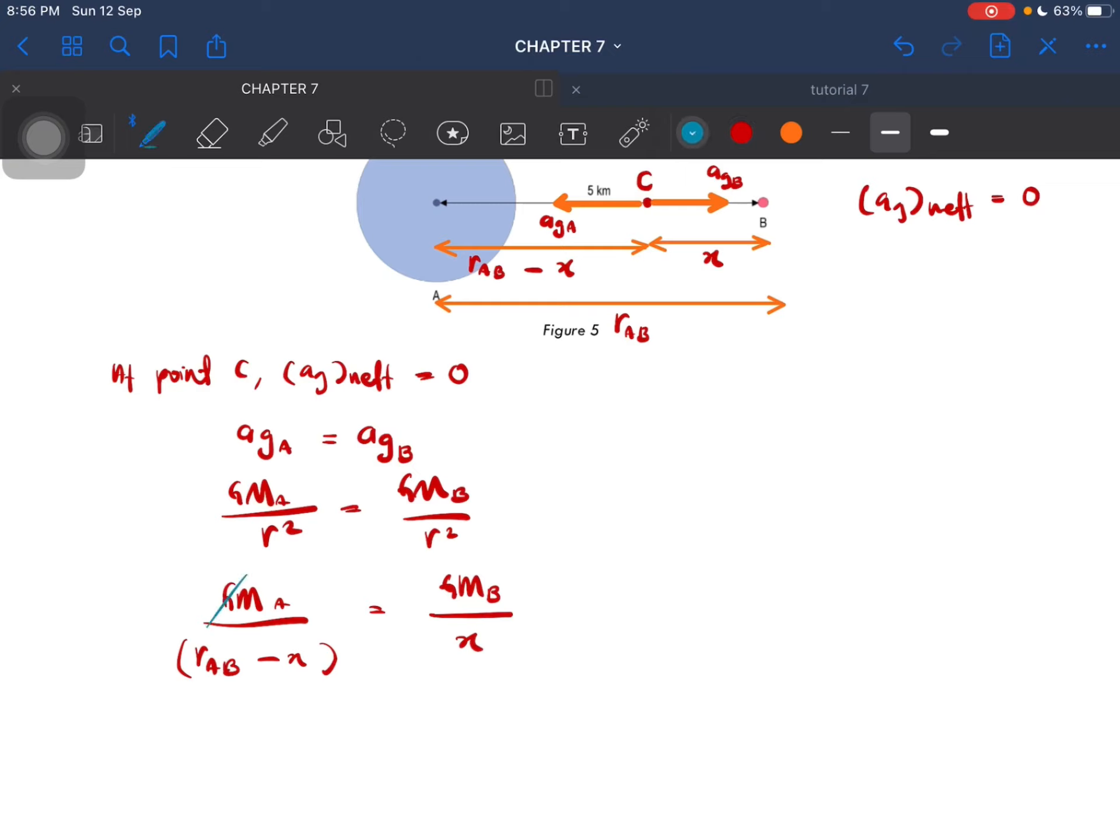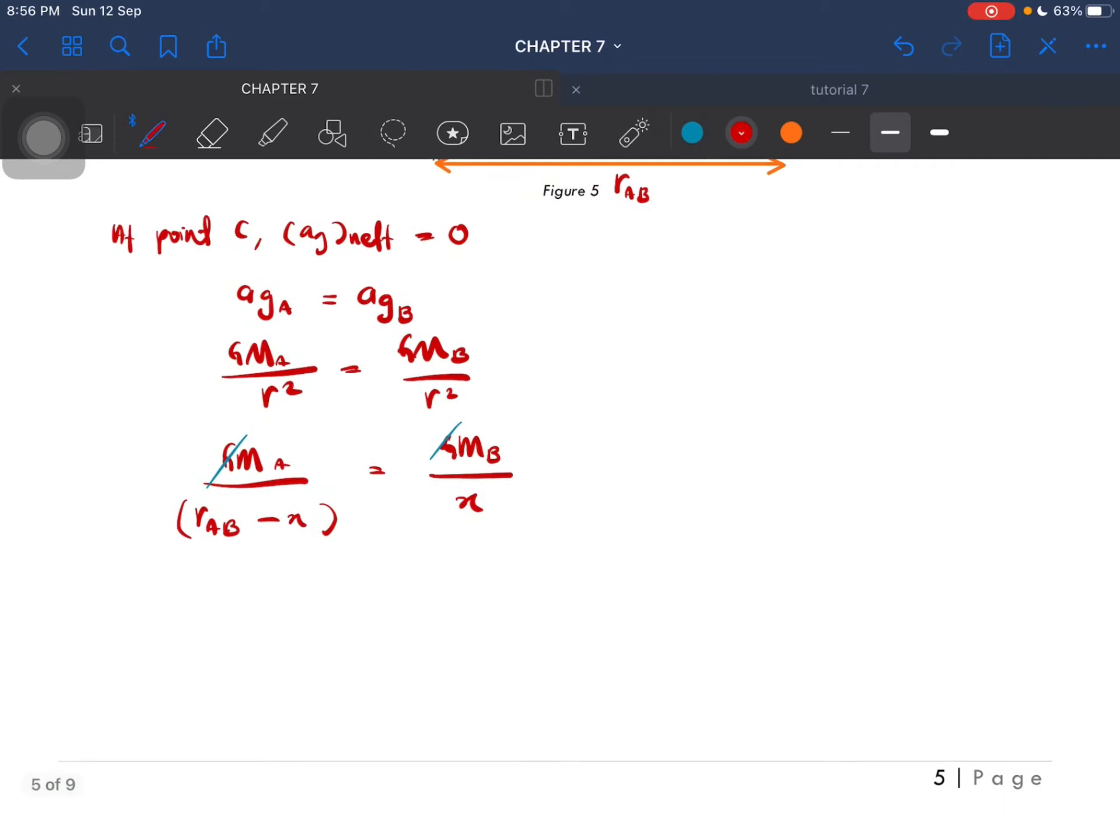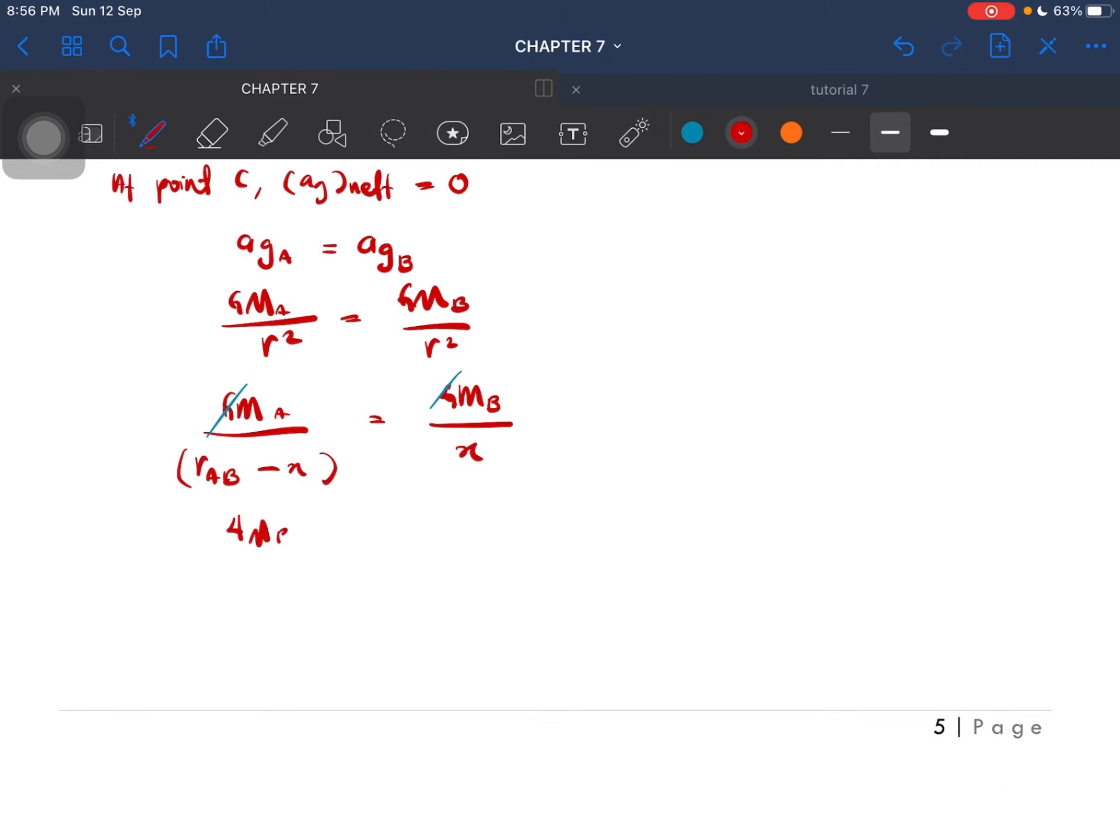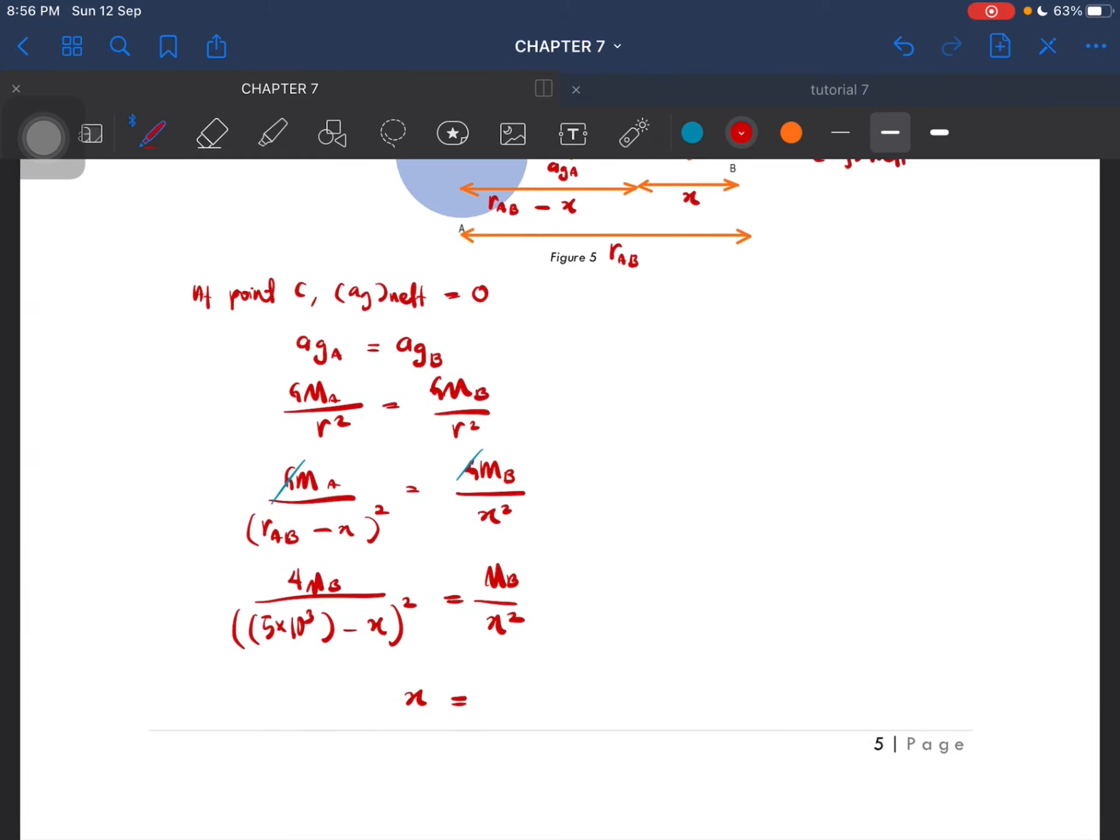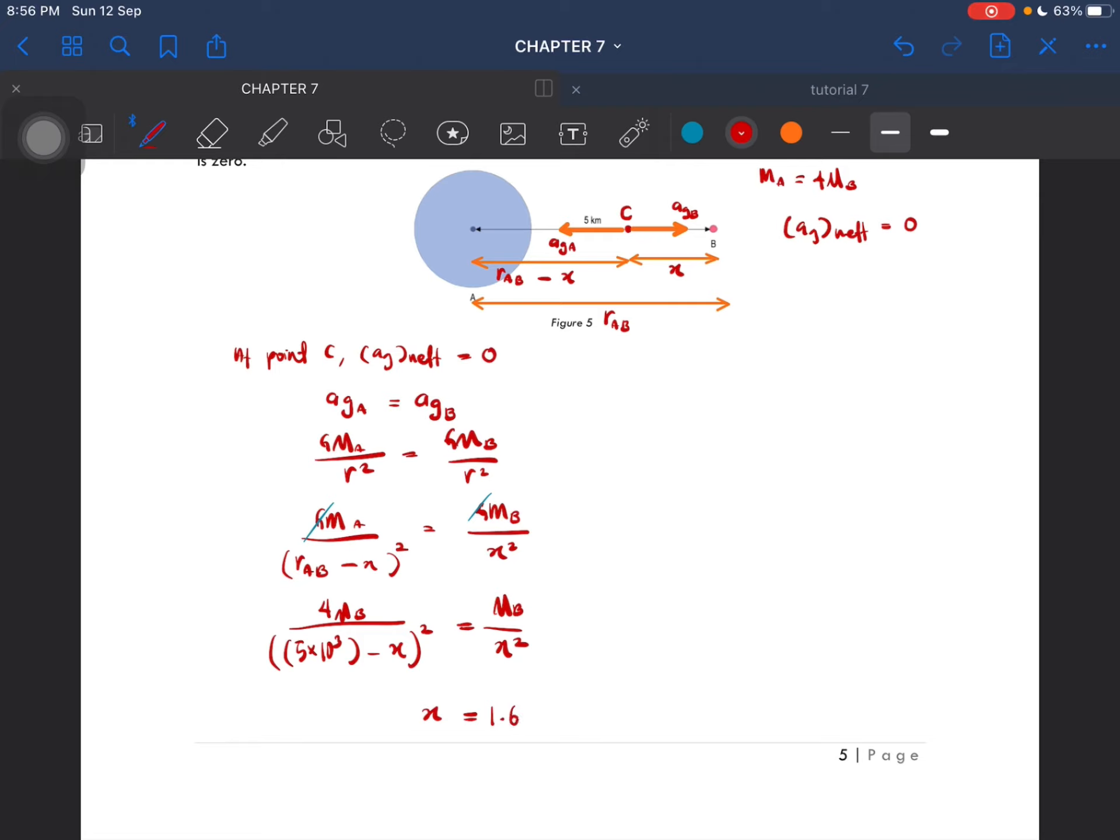So this one can be canceled. So you will then get the value after rearranging. So you have M_B over 5 kilometer minus X. Oh, I forgot to put square. This is square. Don't forget square. This is M_B over X squared. So rearrange, you should get the value of X to be equal to 1.67 times 10 to the power of 3 meter.